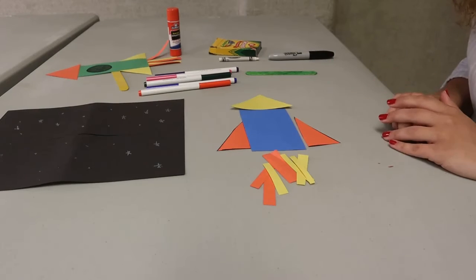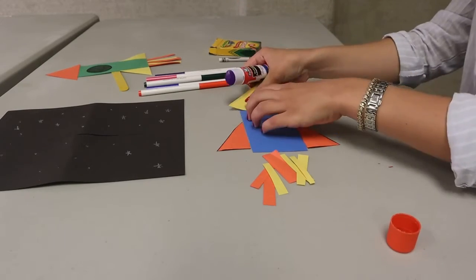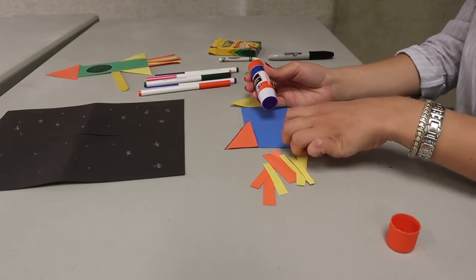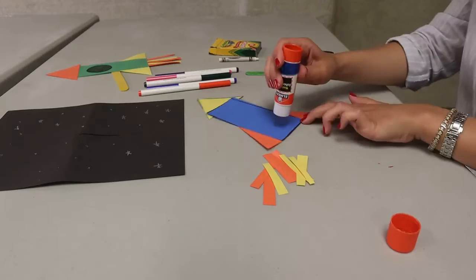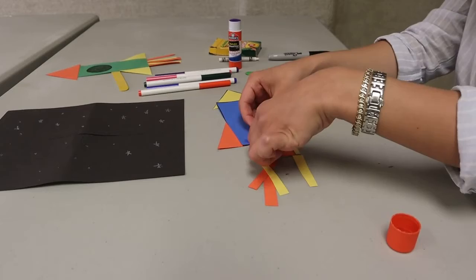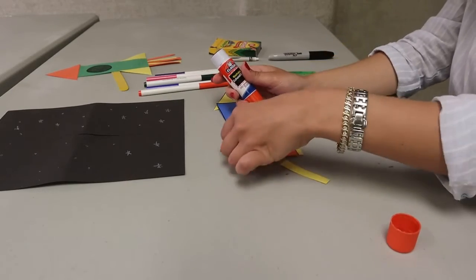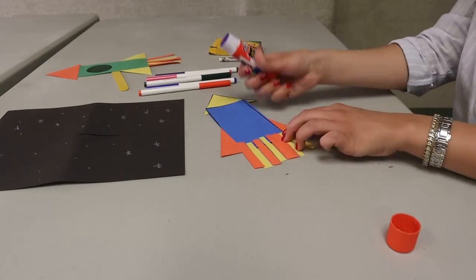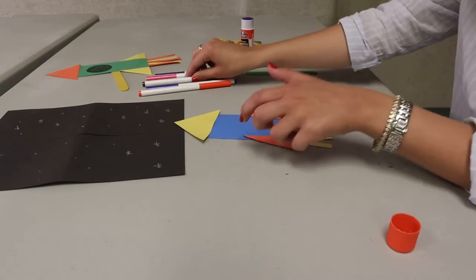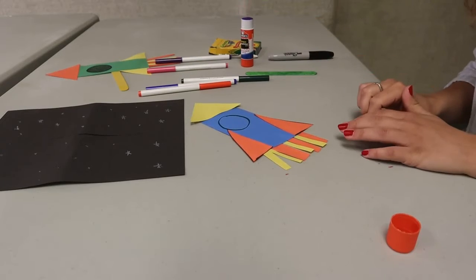So now that I have all the pieces to my spaceship, I'm going to glue them together. And there is our spaceship. And you can decorate however you want. Then I'm going to give my spaceship a window so my little astronaut can see outside.